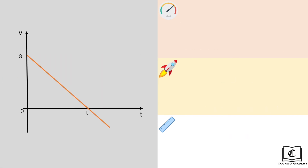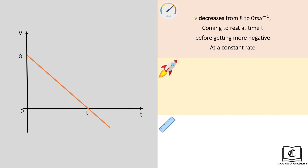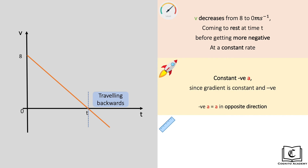Now to our final graph, where we combine the positive and negative graphs together. We can see that velocity decreases from 8 to 0 meters per second, coming to rest at time t momentarily, before getting more negative at a constant rate. The object was initially travelling forward but slowing down, then proceeded to start moving backwards with increasing speed. The gradient is a straight line pointing down, meaning acceleration is constant but negative — pointing backwards. Note that displacement A is positive and displacement B is negative. Net displacement for the entire duration is calculated by taking A and subtracting B.